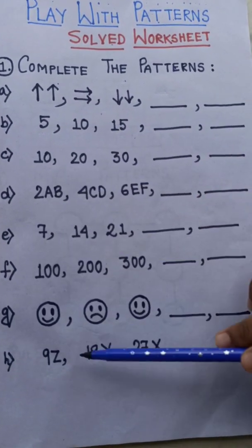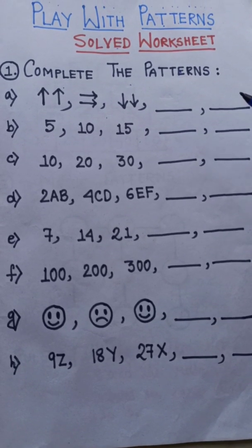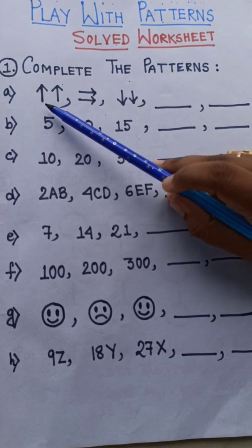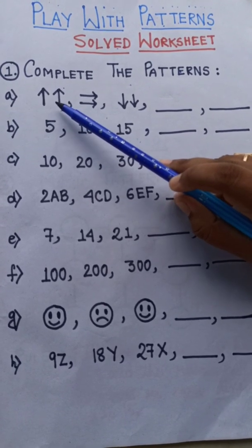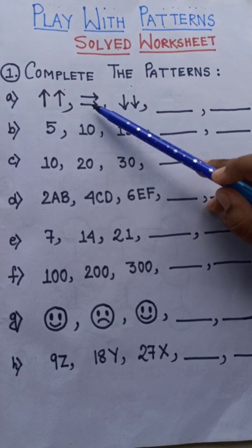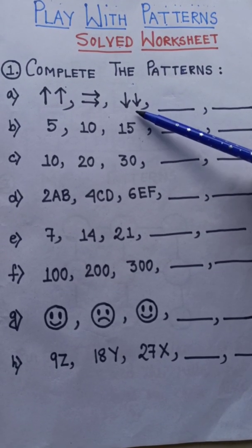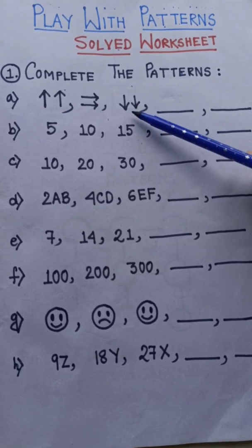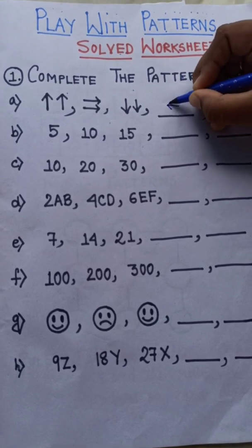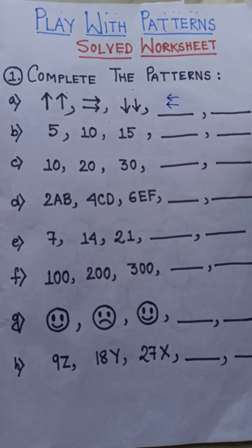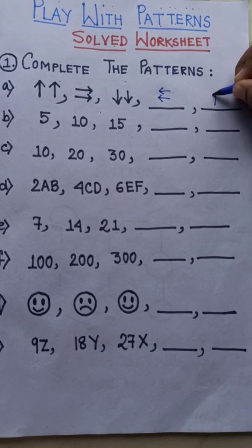In this, patterns will be given to you and you have to complete the pattern like fill in the blanks. If you see the first one, here two arrows are given and both the arrows are pointing upwards. The next two arrows are pointing towards the right, and after that both arrows are pointing downwards. So the next arrow will be pointing leftwards, and the very next two arrows will point upwards.